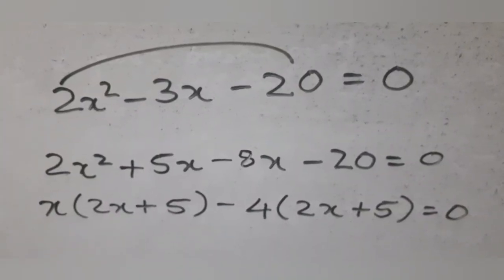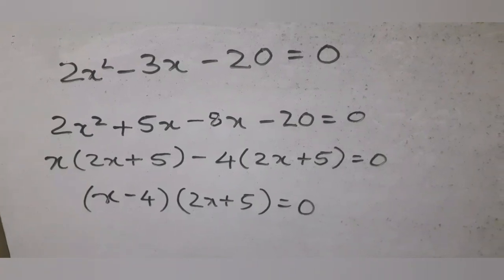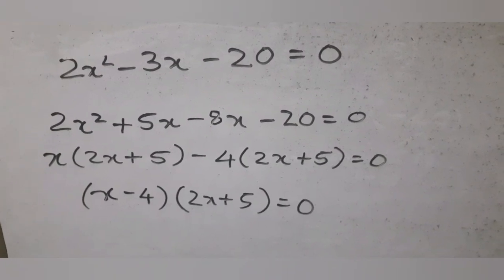Take x common from the first two terms and minus 4 common from the last two terms. So the factors are x minus 4 and 2x plus 5.